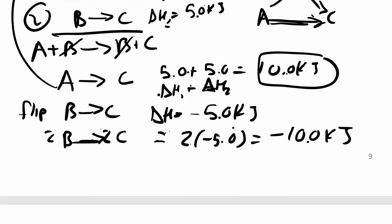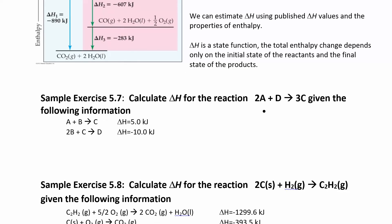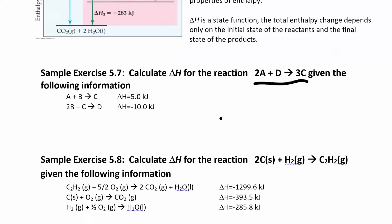We're going to use this because you can manipulate delta H values to get the reaction you're looking for. Suppose you had an overall reaction like 2A plus D gives 3C, but it was really hard to measure that in one step. If you know the delta H for individual steps, you can manipulate those reactions so that when you add them up they equal this overall reaction. Go step by step — when you change the reaction, you change the delta H. You can multiply by some number, divide by that number, or flip the reaction and change the sign of delta H. When you add the two reactions, you add the delta H's.